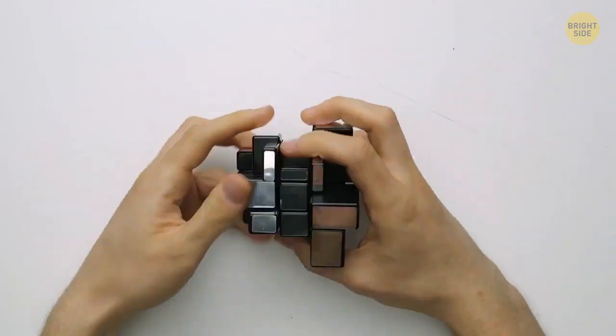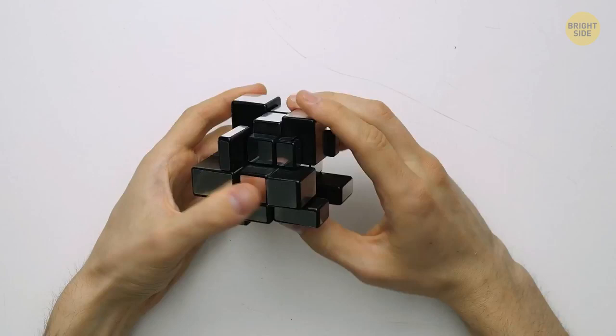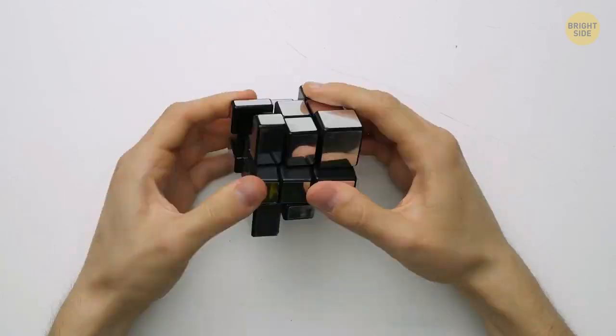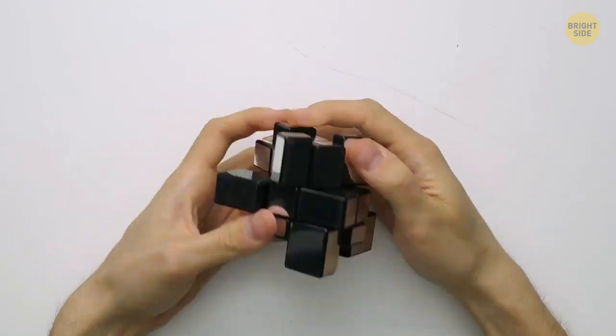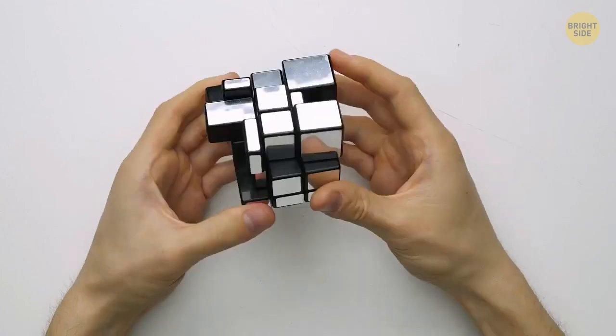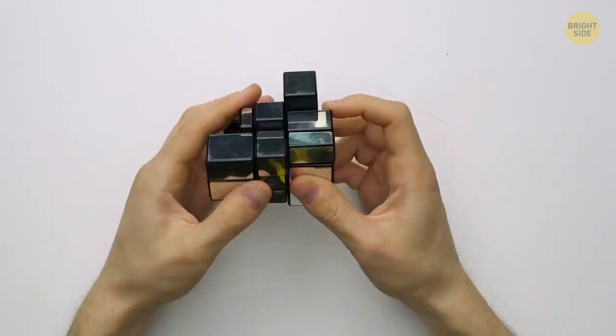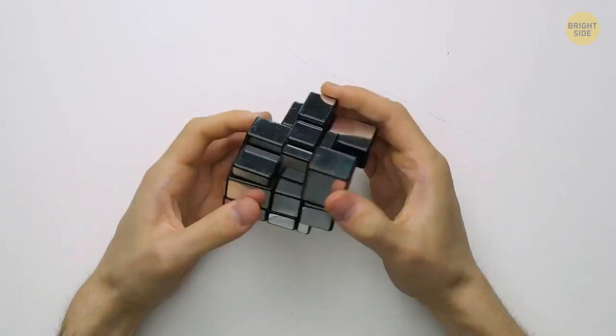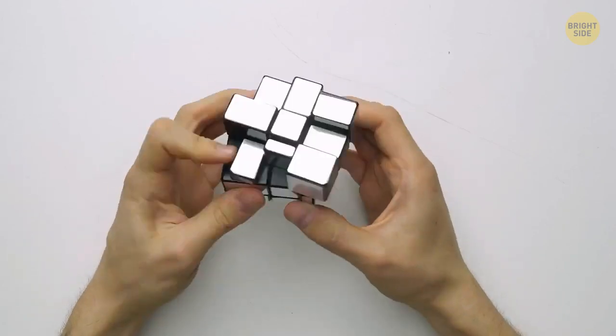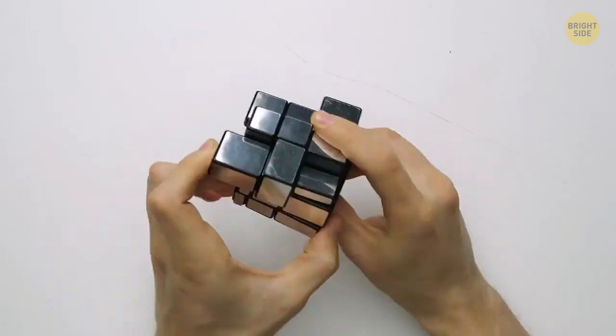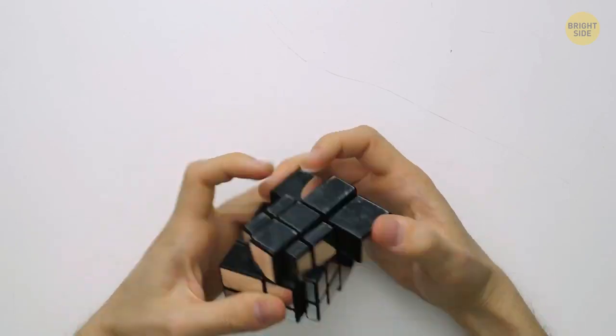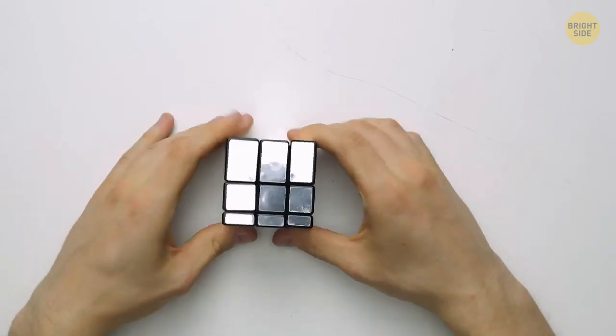Congrats! You now know how to solve a classic 3x3 Rubik's cube. This method will work on other types of 3x3 cubes too. But the real kicker is that it also helps solve even more complex ones, so just keep practicing and you'll have it down in no time! Did you manage to solve the cube using this algorithm? Or maybe you have your own way of doing it? Let me know down in the comments!